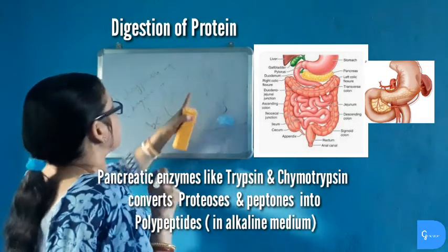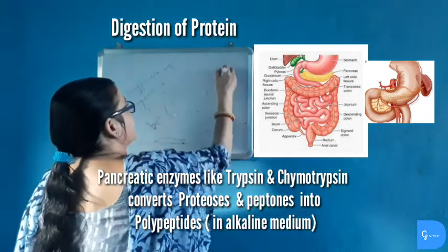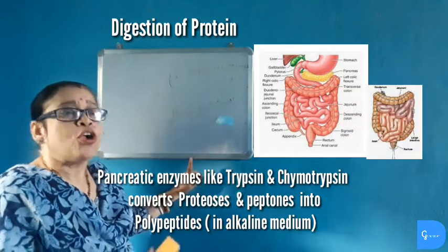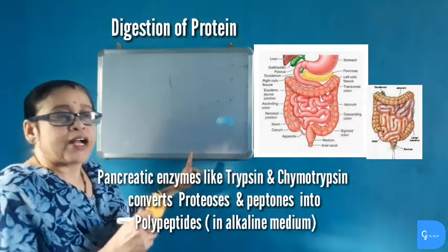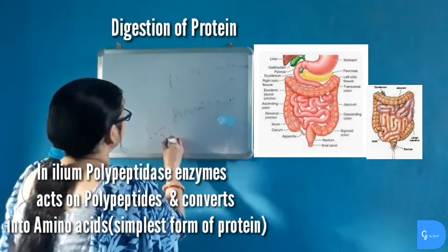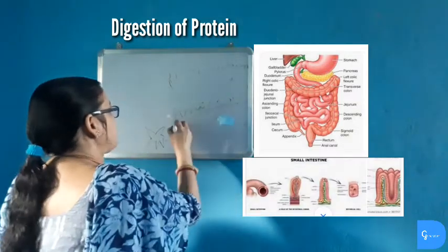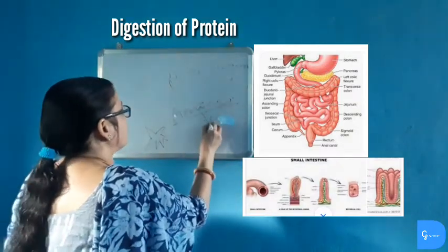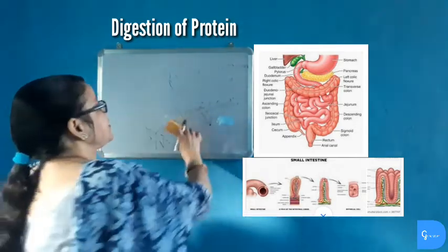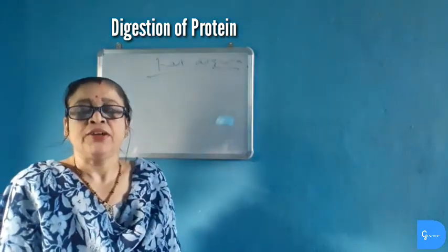In the ileum, polypeptidase enzymes act on polypeptides and convert them into the simplest form of protein, which is amino acid. The protein is absorbed in the small intestine by the villi in the form of amino acids. Amino acid is the simplest form of protein, converted by polypeptidase enzymes present in the intestinal juice of the ileum.